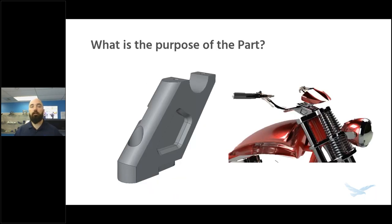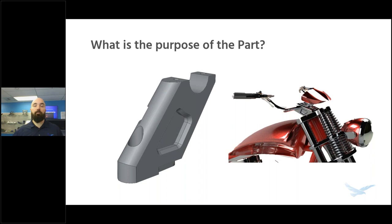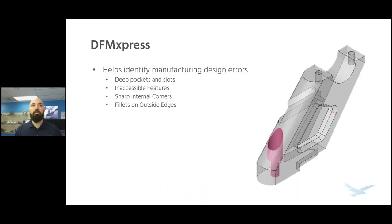Before we get into part design, I want to show the part we'll be looking at for the majority of this webinar — a handlebar riser for a motorcycle. Traditionally this is a machined part. However, as printer technologies become more advanced, we can start pushing traditionally machined parts toward additive to make lighter designs, free up space on the shop floor, and make the overall design process smoother. This leads into the very first SOLIDWORKS tool, and you'll notice that many tools I recommend are based on different manufacturing methods but can be adapted to 3D printing.